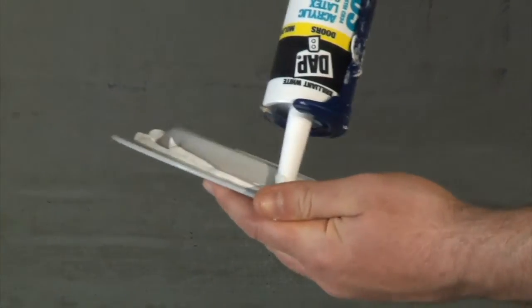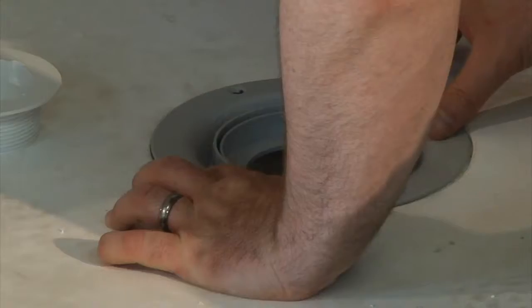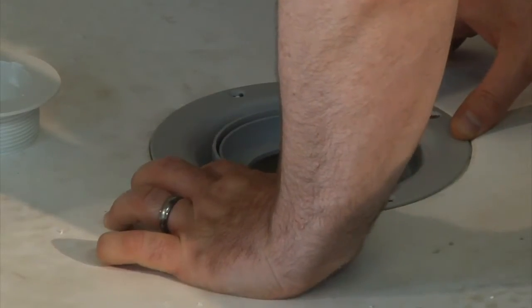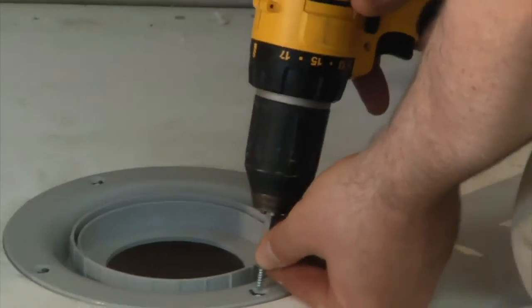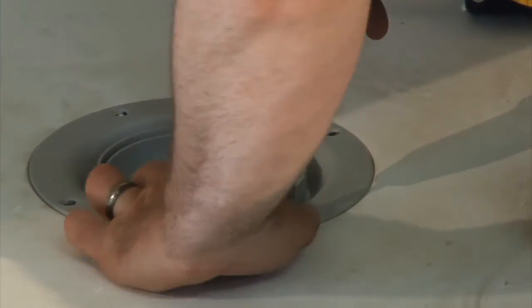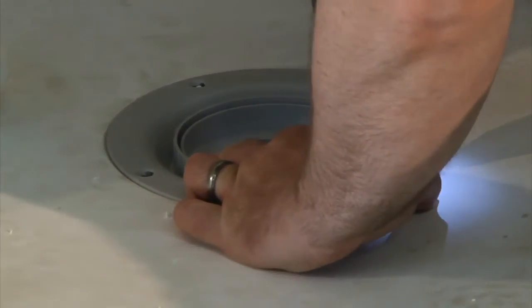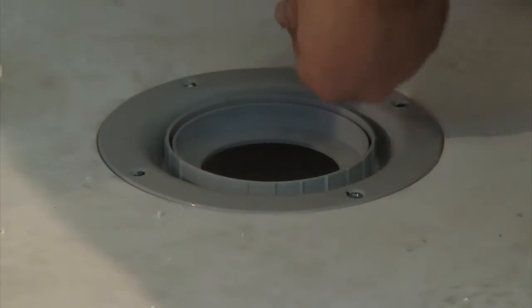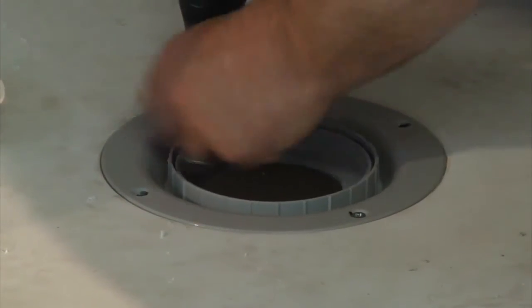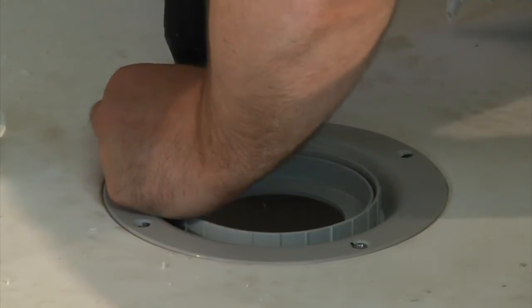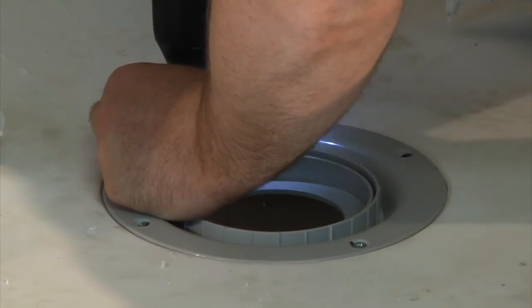After pre-drilling the four holes, put latex caulk underneath and seal this ring to the pan. Then use the stainless steel screws to fasten the flange to the pan. It's important to use a latex product here. Latex will not work on top of silicone, and latex waterproofing is what you will use to seal the shower.